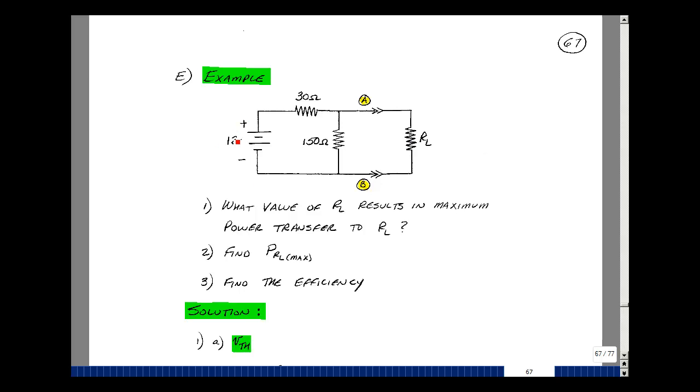There are some interesting things going on here. One way we could solve this problem is to thevenize this part of the circuit, and we would get the thevenin voltage and thevenin resistance, and then we'd use that thevenin resistance to pick R-sub-el, and then we could also calculate the voltage across R-sub-el, and then eventually the efficiency.